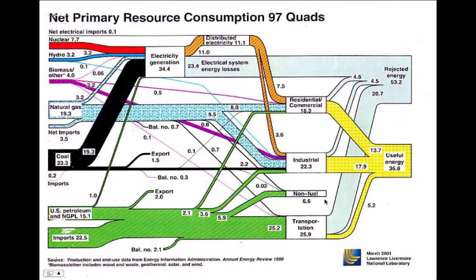This is called a Sankey chart — it looks like a big bowl of spaghetti. It shows all the inputs into the economy from different energy sources: nuclear, hydro, biomass, natural gas. Then it shows how they're transformed as they go through the economy, and on the other side shows the output. Following coal: some goes directly to industry for heat, but most goes to make electricity. Notice that 34 units of energy go into generating electricity from coal and other sources, but only 11 units of electricity come out of the power plants because of that thermodynamic limit.